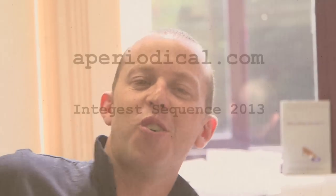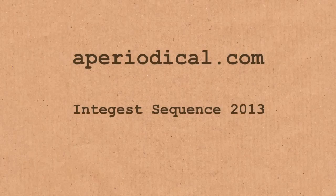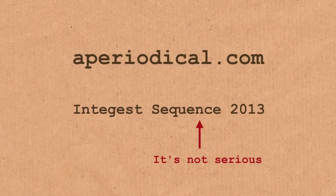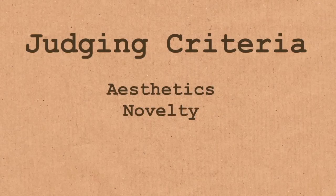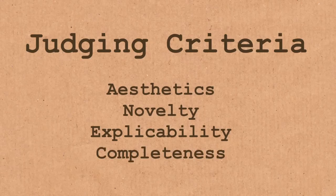The guys at A Periodical launched a little competition to find the integer sequence of 2013. It's a bit of fun, not a serious thing. They've looked at the Online Encyclopedia of Integer Sequences and run a competition to see which one is the best, based on various categories like aesthetics, novelty, explicability, and completeness. We thought we'd go through these sequences.